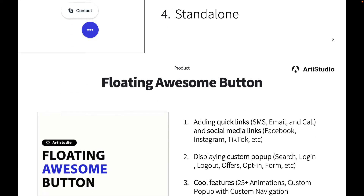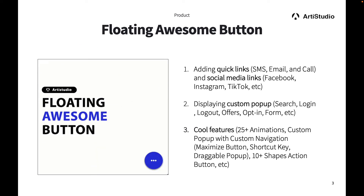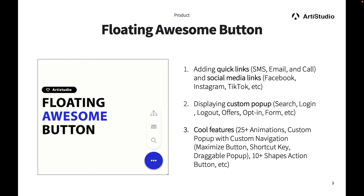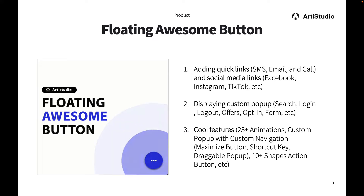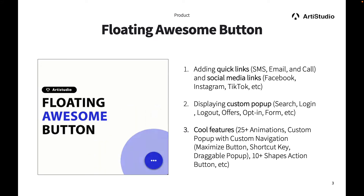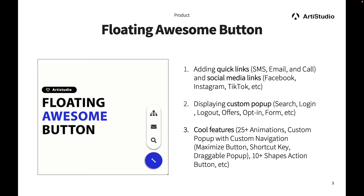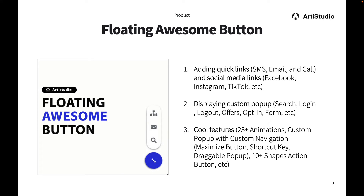In this video we're going to be using a plugin called Floating Awesome Button. For those who don't know about it yet, Floating Awesome Button is a WordPress plugin that can help you add quick links, social media links, and display custom pop-ups. It also has nice features like 25+ animations, custom pop-ups with custom navigation, and 10+ button shapes to pick from.